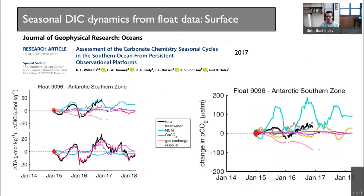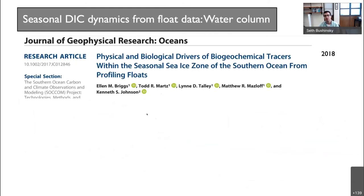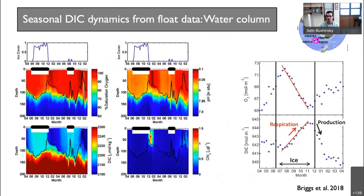Another example from Ellen Briggs uses derived carbon products in a really nice way: the first look at under-ice observations from an Argo float. Looking at float 590-4184, sections show oxygen saturation, pH, derived DIC, and chlorophyll. For the first time from floats we can see under-ice oxygen drawdown and DIC return — evidence of respiration under ice. Then as soon as — and even a little before — the ice starts melting, we see an increase in oxygen and a decrease in DIC from phytoplankton production. These data are really just scratching the surface of what's possible.